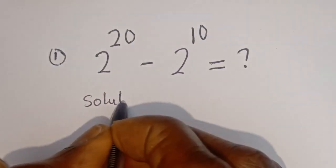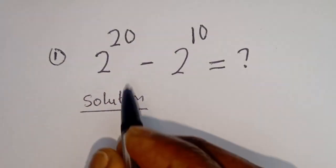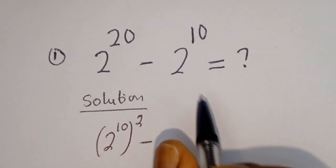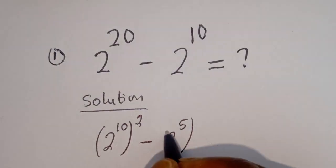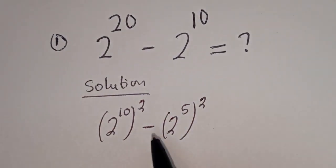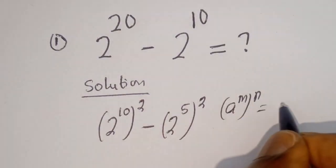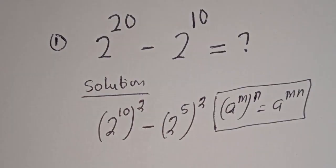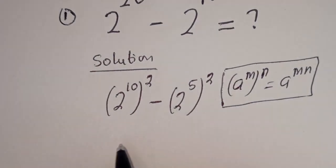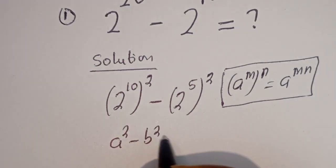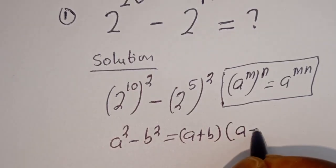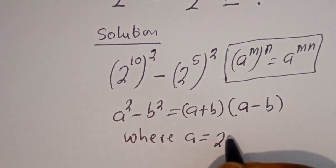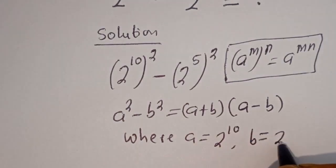Solution. Then, 2 to the power of 20 can be written as 2 to the power of 10, squared, minus 2 to the power of 10 can be written as 2 to the power of 5, squared. That is, using the rule: a to the power of m to the power of n equals a to the power of m times n. Then this is in the form of a perfect square. If you have a squared minus b squared, this is equal to a plus b, bracket, a minus b, where a is equal to 2 to the power of 10 and b is equal to 2 to the power of 5.